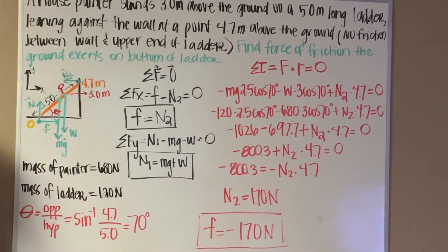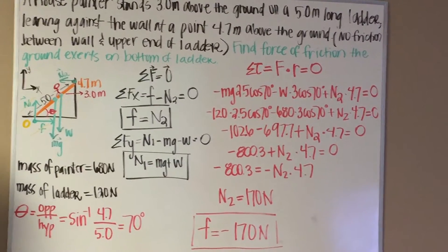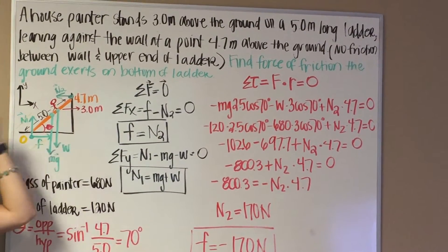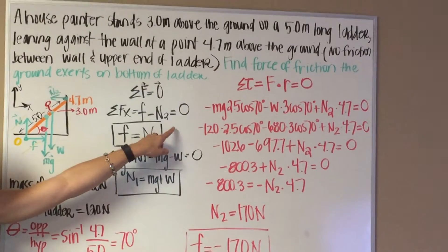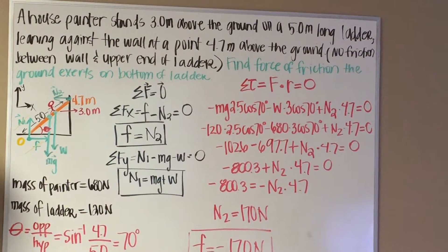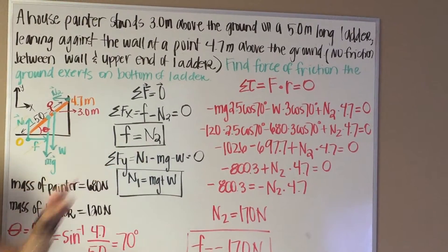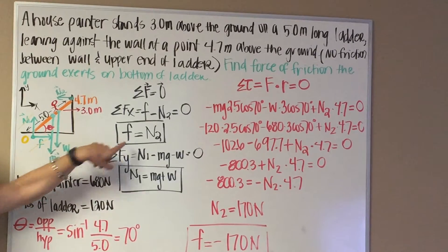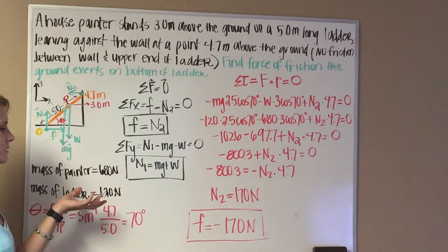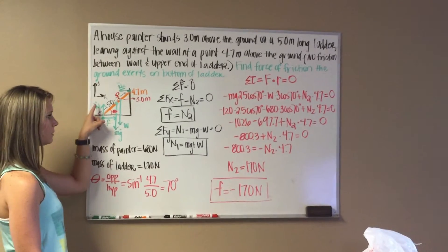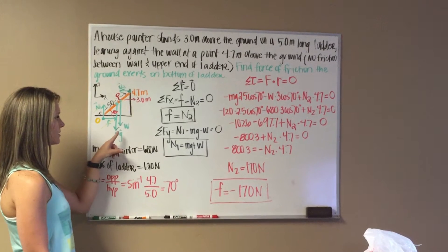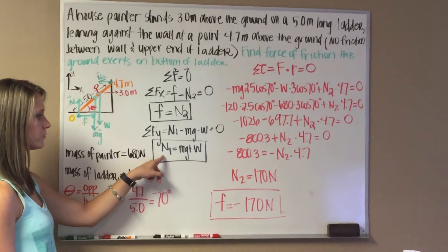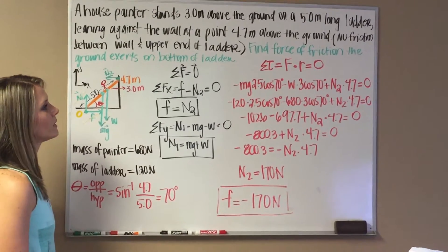We find the forces in the x direction first, then the y direction. In the x direction, the frictional force minus the second normal force equals zero, so friction equals the second normal force. It's okay that friction cancelled in the torque equation because we can still find it here. For the y direction, the first normal force minus the weight of the ladder minus the weight of the painter equals zero, solving for the first normal force — though we don't actually need this equation.